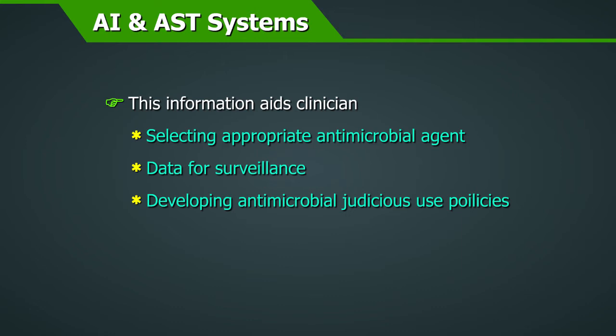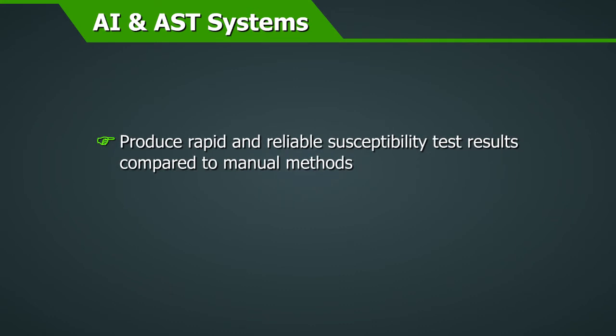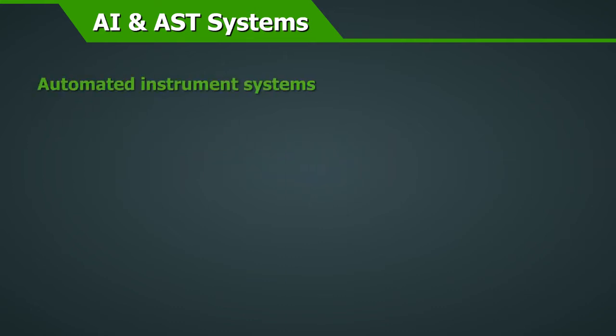Automated identification and AST platforms produce rapid and reliable susceptibility test results compared to manual methods, because sensitive optical detection systems allow detection of subtle changes in bacterial growth.